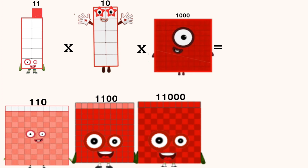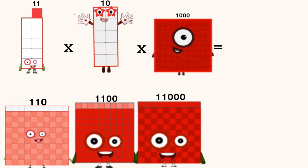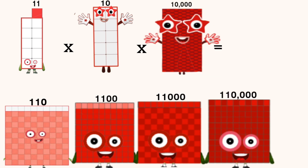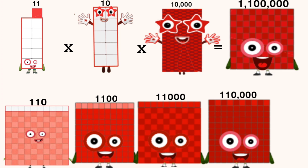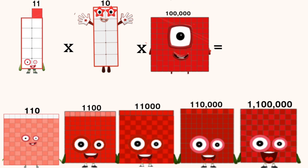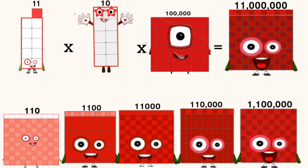Eleven times ten times ten times ten equals one million one hundred thousand. Eleven times ten times ten times ten thousand equals one million one hundred thousand. Eleven times ten times one hundred thousand equals eleven million.